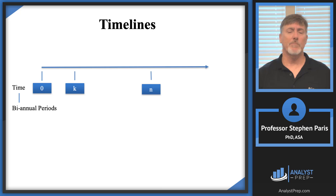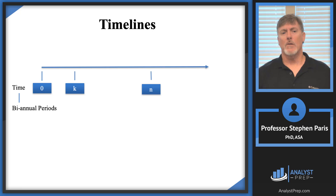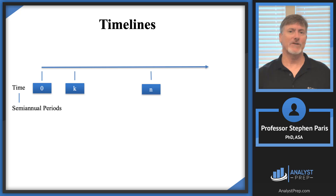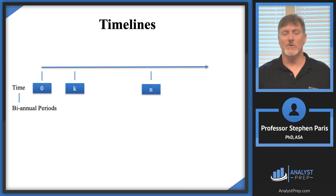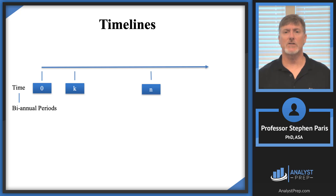Maybe even something like biannual periods. I wanted to include biannual periods because biannual means once every two years, whereas semi-annual means every six months, or twice a year. So keep that in mind. The values on the timeline are kind of irrelevant in the sense that you want to pick a time unit and then just be consistent throughout the problem.